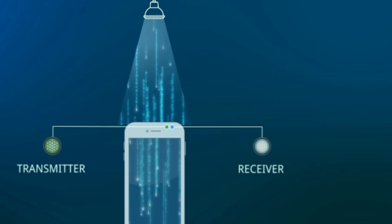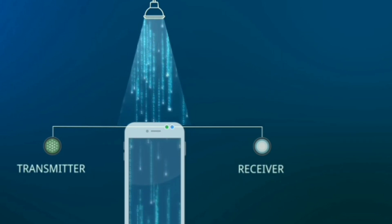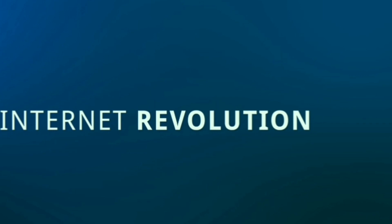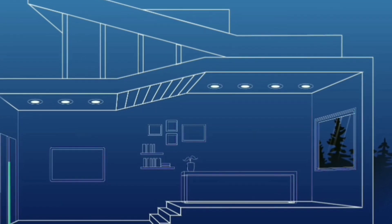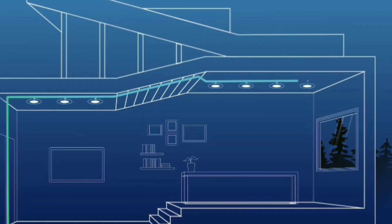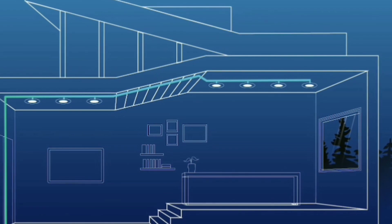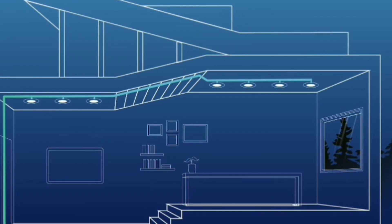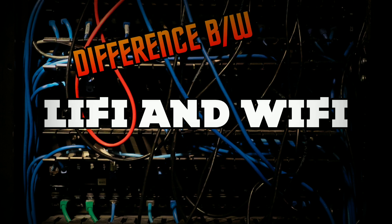Now let's see how Li-Fi technology works. Li-Fi is designed to use LED light bulbs similar to those currently in use in many energy-conscious homes and offices. However, Li-Fi bulbs are outfitted with a chip that modulates the light imperceptibly for optical data transmission. Li-Fi data is transmitted by the LED bulbs and received by photoreceptors — that simply means a light bulb with Li-Fi technology inside.